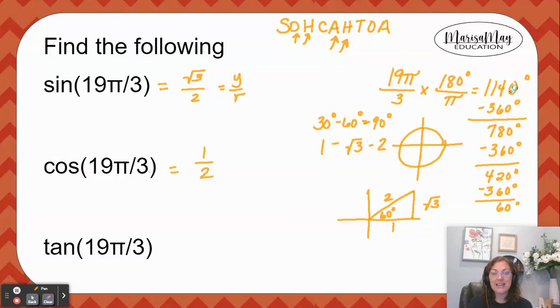And finally tangent is opposite over adjacent, so we get square root of 3 over 1, or just square root of 3. So I hope this is a good review for some of your trig functions.